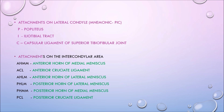Moving on to the attachments on the intercondylar area. The first three structures relate to the anterior aspect: the AHMM (anterior horn of the medial meniscus), attached just in front of the medial articular surface; the ACL (anterior cruciate ligament), attached on a smooth area just behind the previous attachment; and the AHLM (anterior horn of the lateral meniscus), attached to the front of the intercondylar eminence and lateral to the anterior cruciate ligament.